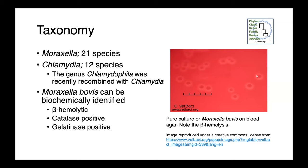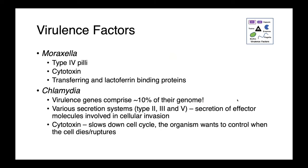Moraxella species can be relatively easily differentiated from each other biochemically. Important characteristics include their hemolysis pattern, catalase, and gelatinase. In this image on the right, you can see a pure culture of Moraxella bovis on blood agar, and the beta hemolysis under and around the colonies is quite evident. Moraxella species produce type 4 pili to grab onto their host tissues, cytotoxin, and transferrin and lactoferrin binding proteins.